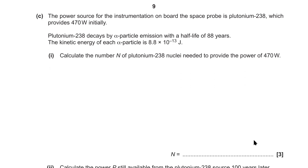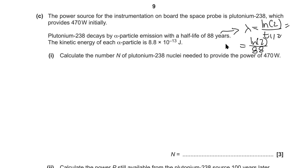The power source for the instrumentation on board the space probe is plutonium-238, which provides 470 watts initially. Plutonium decays by alpha particle emission with a half-life of 88 years. As soon as I see the half-life, I write that the decay constant λ = ln2 / T½, so λ = ln2 / (88 × 365 × 24 × 3600). The kinetic energy of each alpha particle is given — calculate the number of plutonium nuclei needed to provide 470 watts.